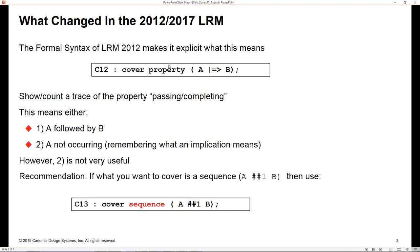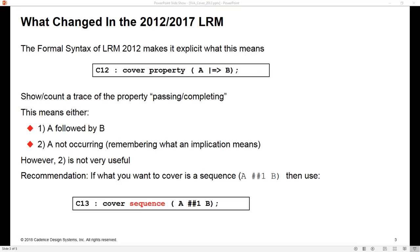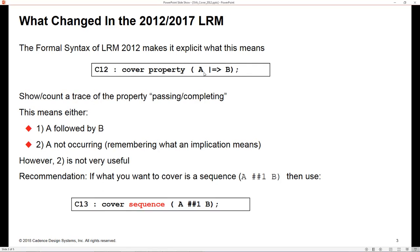This is not very useful knowing that A didn't occur, and it's especially not useful if you're using a formal tool. In formal, when you say cover a property or cover a sequence, what you're asking the tool to do is to show you an example of A followed by B. Formal tools have no input stimulus as such - the tool just shows you the scenario. From the 2012 LRM, if the tool followed the language reference manual, then you'll get shown A not occurring, which is not very useful at all.